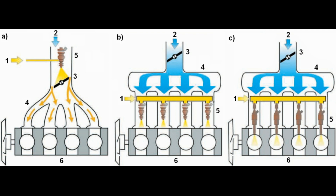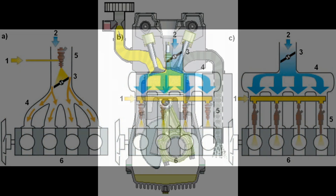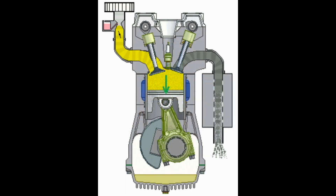Exhaust stroke: in this stroke, the piston moves upward and the burnt or exhaust gases produced in the power stroke escape out of the cylinder through the exhaust valve. In this stroke, the exhaust valve opens and the inlet valve remains closed.